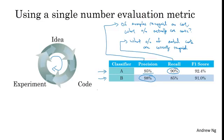In the machine learning literature, the standard way to combine precision and recall is something called an F1 score. The details of F1 score aren't too important, but informally, you can think of this as the average of precision P and recall R. Formally, the F1 score is defined by this formula: it's 2 over (1 over precision plus 1 over recall). And in mathematics, this function is called the harmonic mean of precision P and recall R.